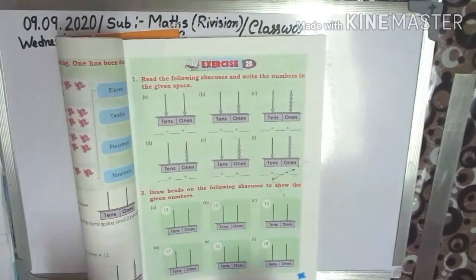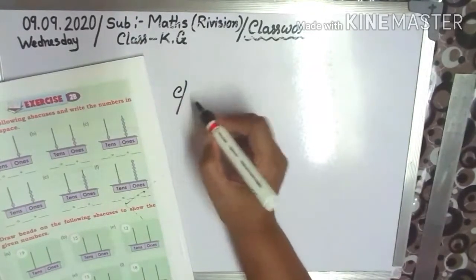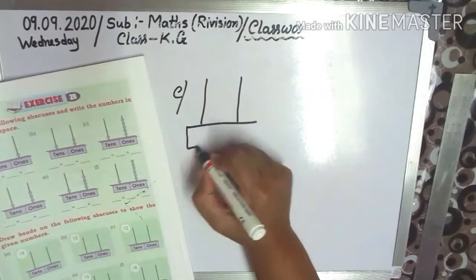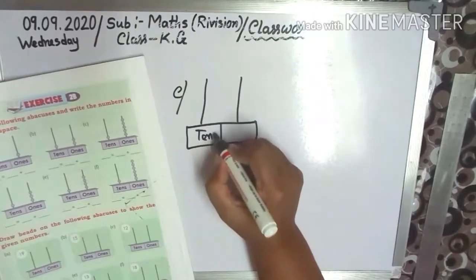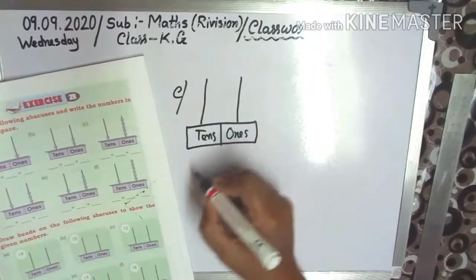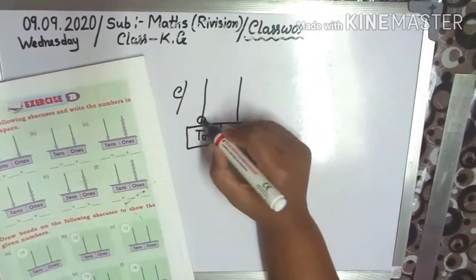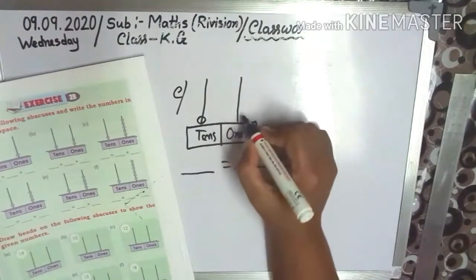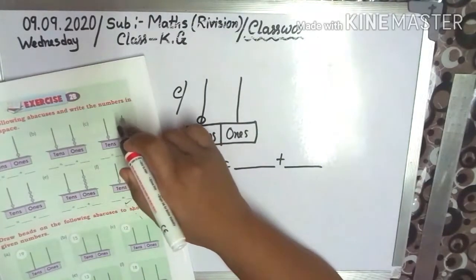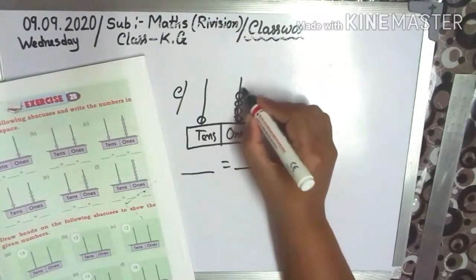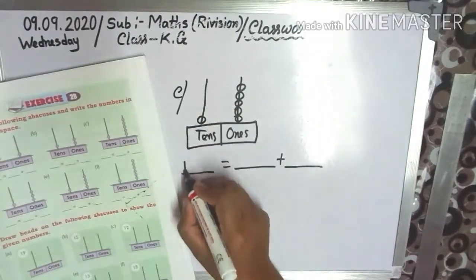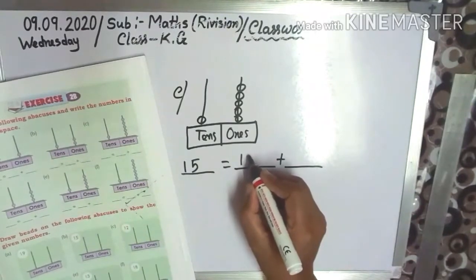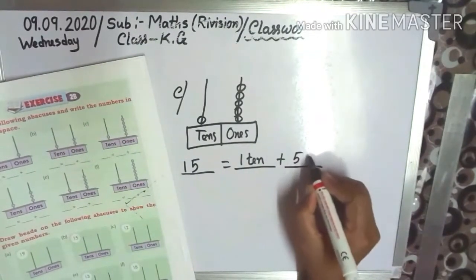Next, follow me. Number 3 — see the bits. Tens: 1 bit. So write 1. Ones: count 1, 2, 3, 4, 5. So 1 ten and 5 ones makes 15. Write here: 1 ten plus 5 ones equals 15.